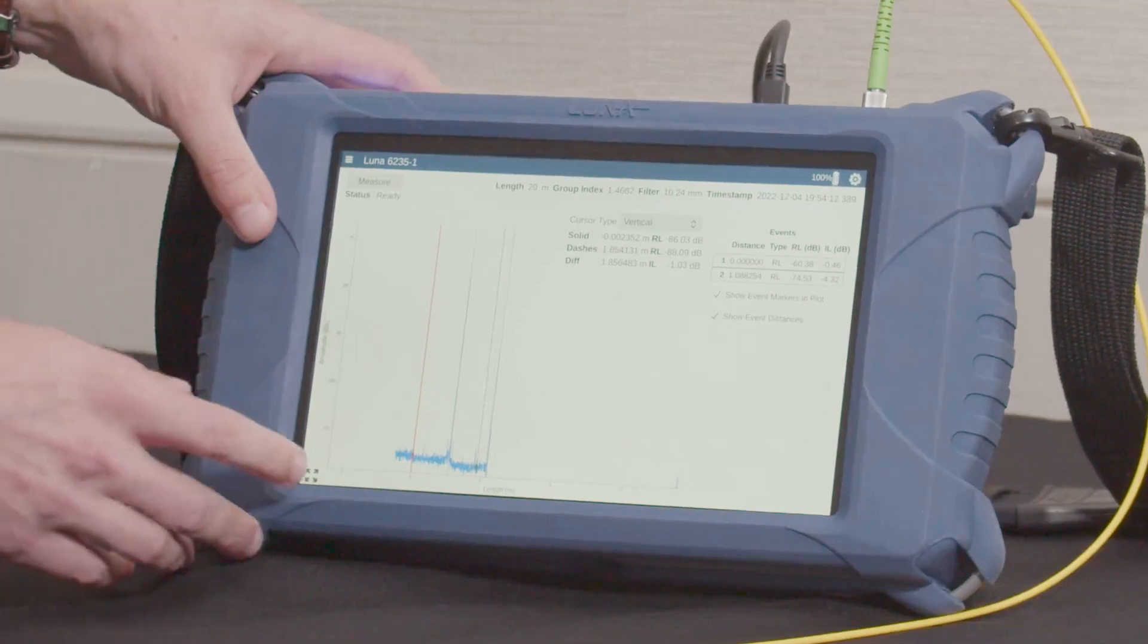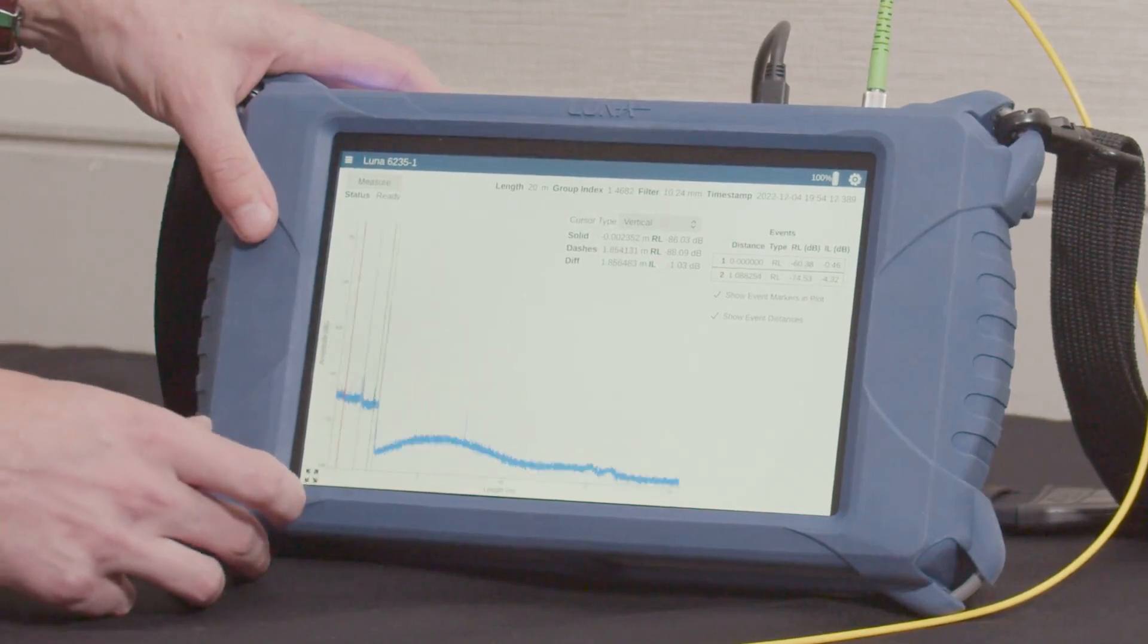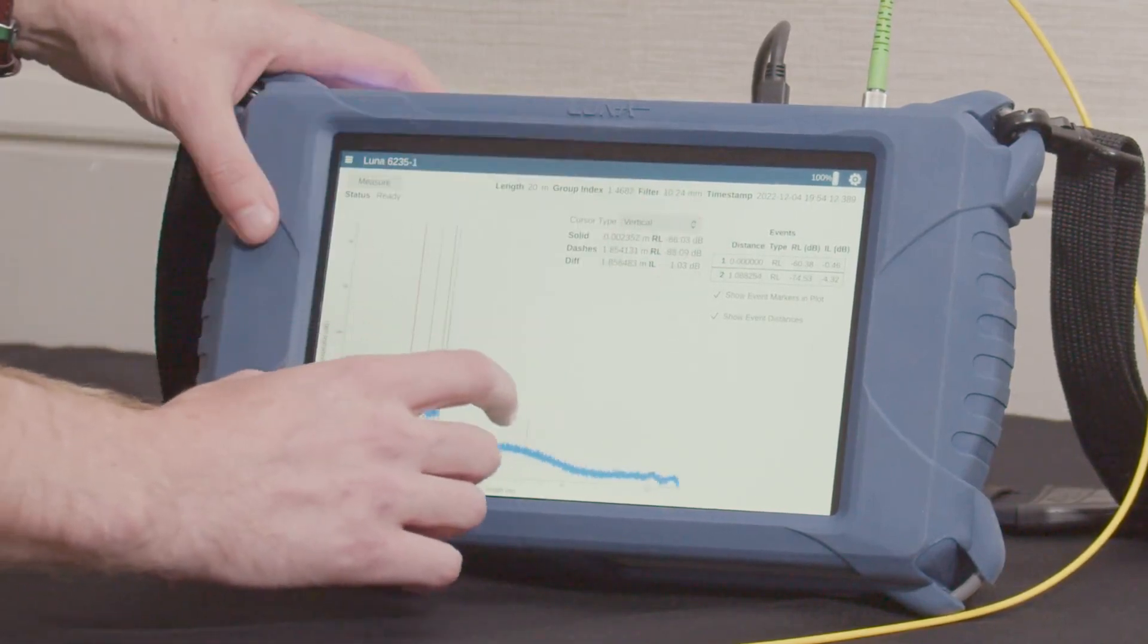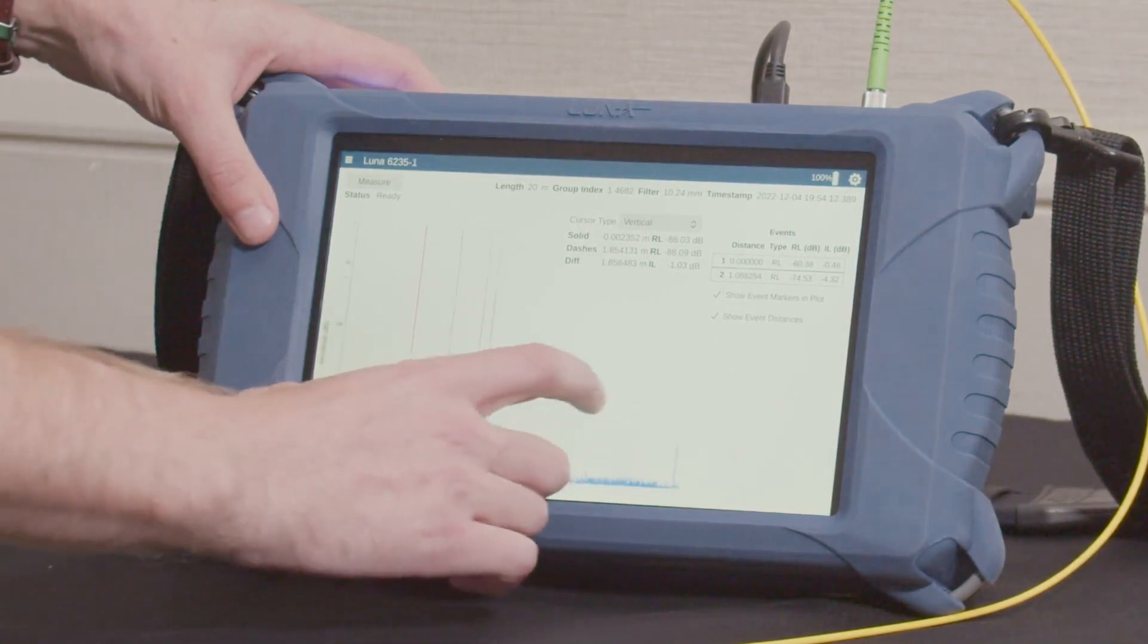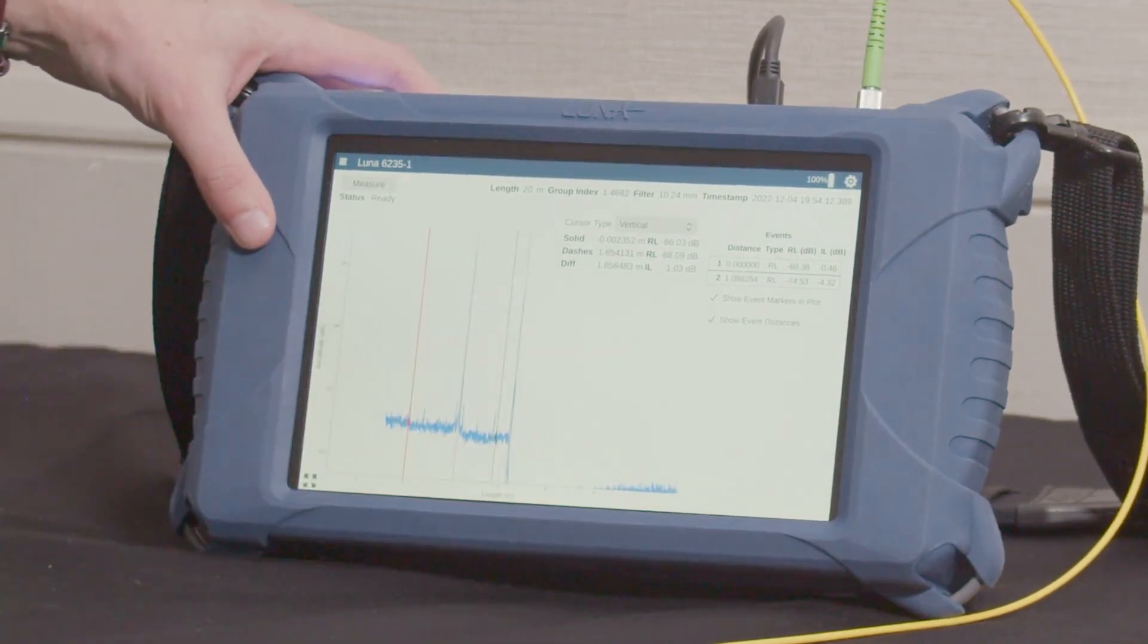Press to rescale. And again, we'll see all of those events, this time automatically identified. So it's finding our connector at the front panel, as well as connections as you go down the length of the fiber.